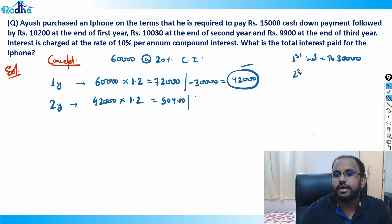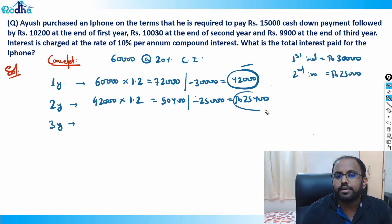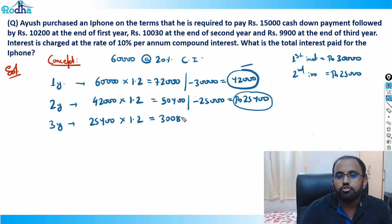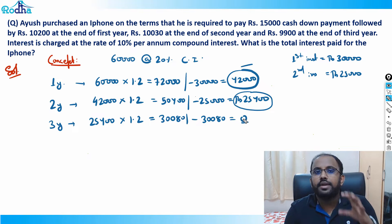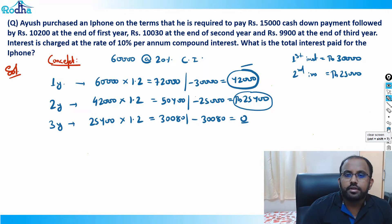Let's say my second installment is rupees 25,000, so I paid rupees 25,000. My balance is now rupees 25,400. In the third year, this balance of rupees 25,400 will increase by 20 percent: that is 5,080, making it 30,080. So if I want to clear my loan at the end of third year, I need to pay 30,080. Whatever installment you pay, the remaining balance will again accrue interest at the same rate — here it is 10 percent.